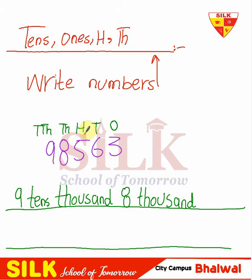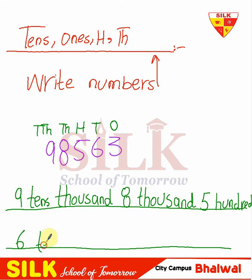What is our value for the hundreds place? It's 5, so the value is 500. Then we have 6 in the 10s place and 3 in the 1s place. So 6 tens and 3 ones. This is how you write and convert numbers into 10s, 1s, 100s and 1000s.